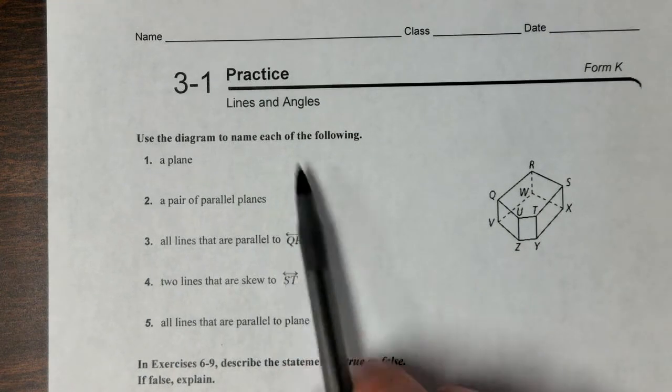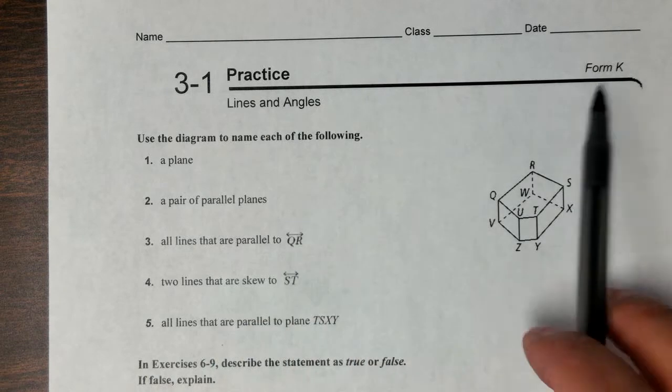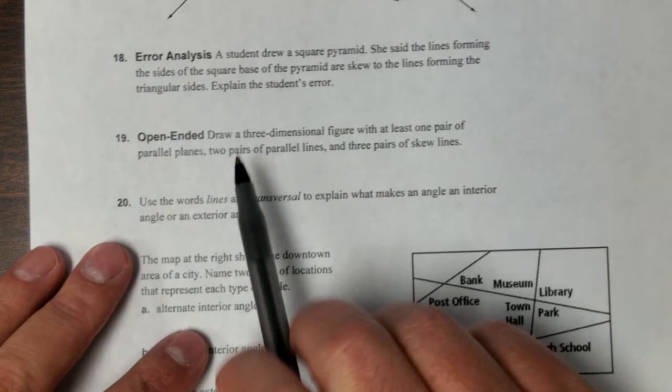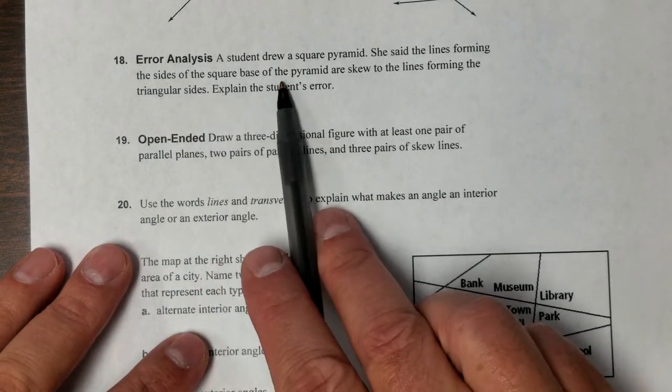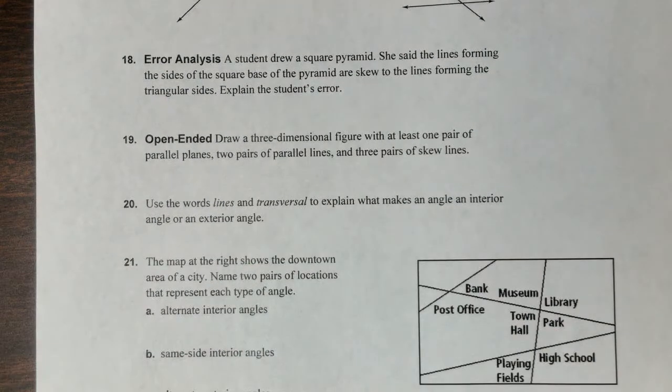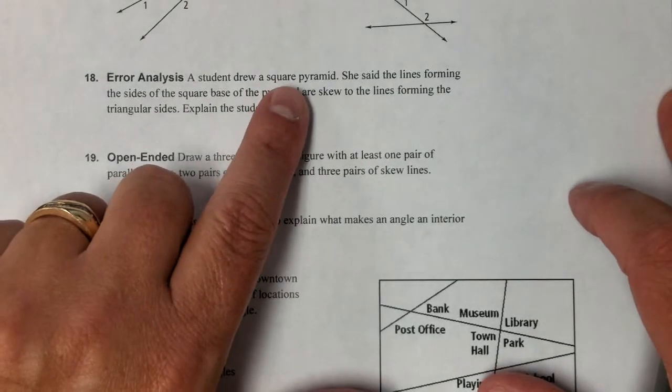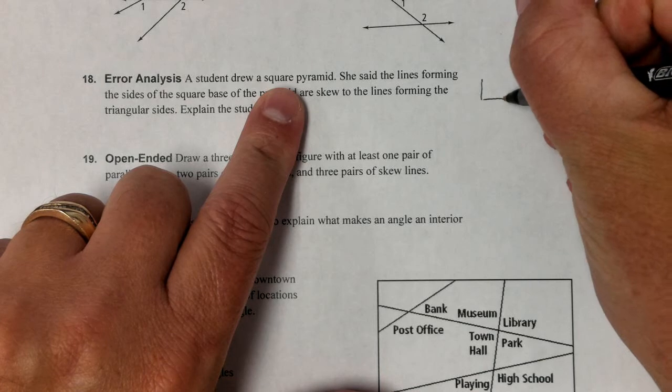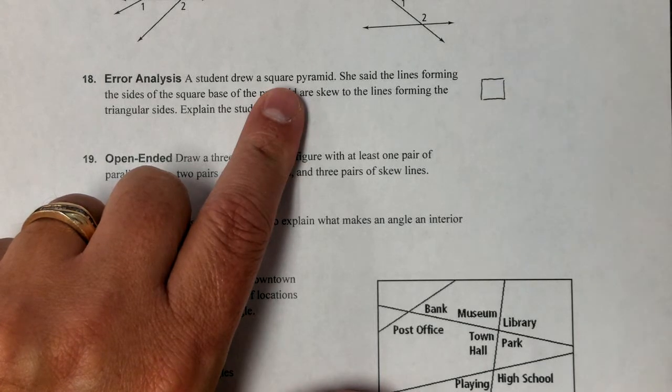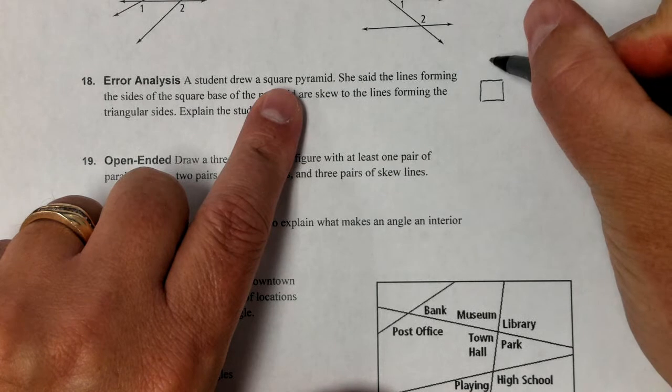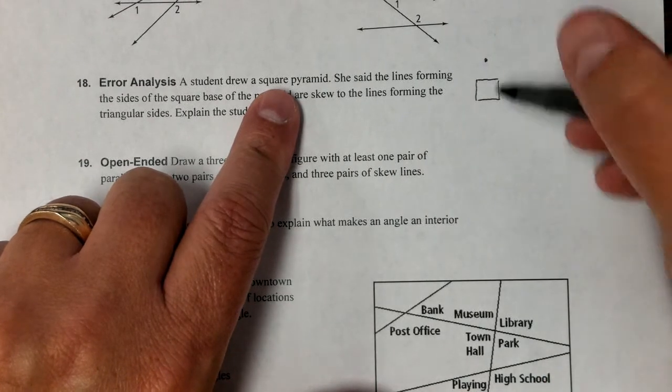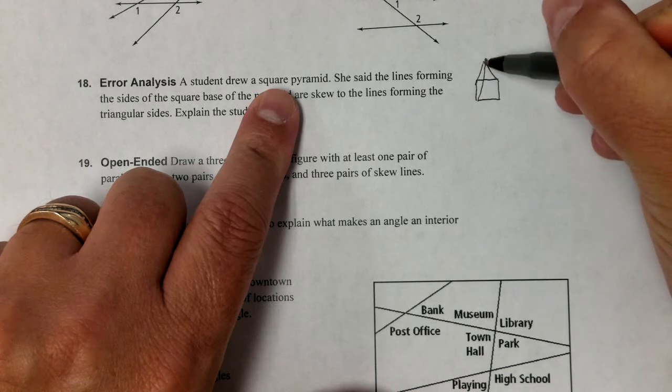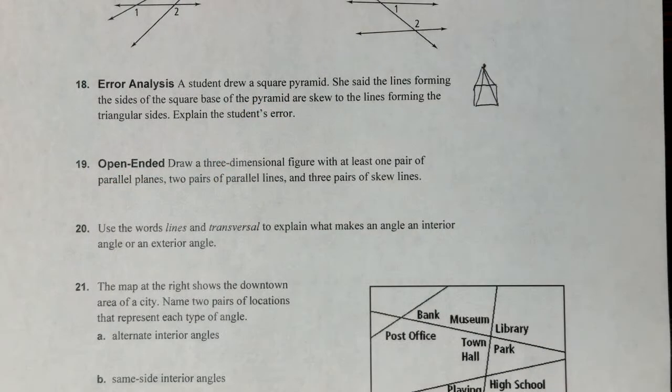Okay, so here are a couple of example problems on 3.1 form K. Number 18: a student drew a square pyramid. What a square pyramid looks like is this - you basically draw it like a square, and then you put a little dot somewhere like up here, and then you connect every point. So that's how I draw it.